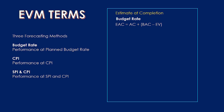The Estimate at Completion (EAC) is the projected total cost of the project at completion. Under the budget rate method, EAC = AC + (BAC − EV): you take the actual cost already incurred, then add the remaining work — which is total budget (BAC) minus earned value (EV), representing work already completed. That sum gives you the EAC, the estimated cost at project completion.